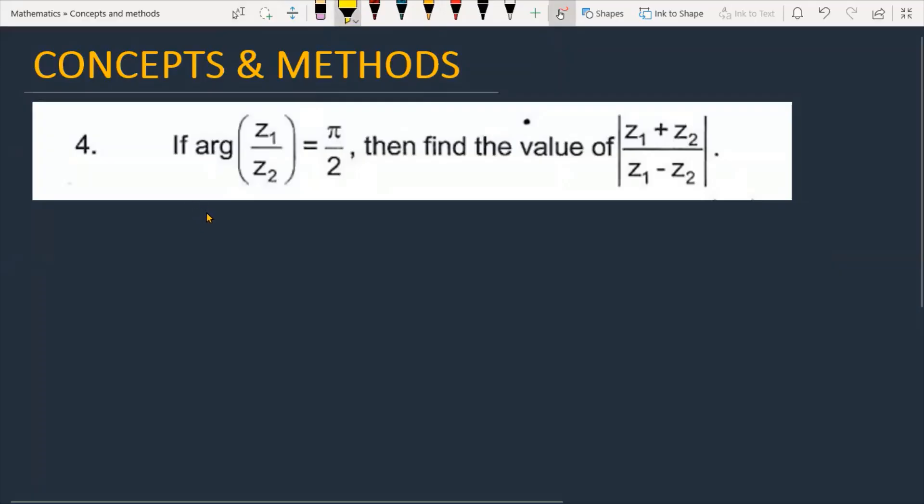The question is: if argument of z1 upon z2 is equal to π upon 2, then find the value of z1 plus z2 upon z1 minus z2. Let's see how we are going to solve the given problem.